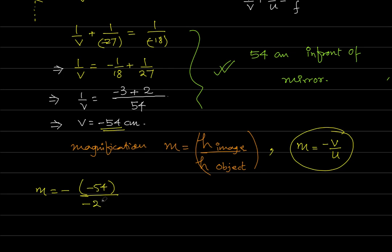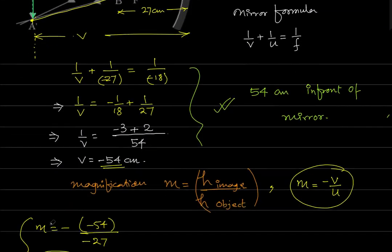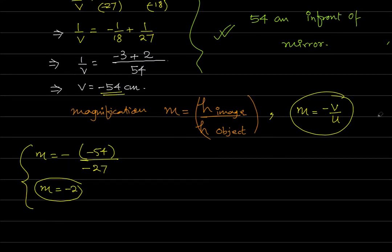This is minus minus cancel. Finally, m is minus 2. So, if we just ask magnification, then the answer is minus 2. But the size of the image is asked, so again, we have to use this formula.